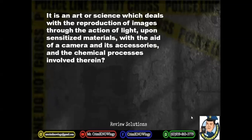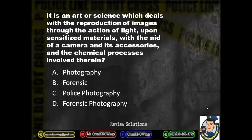Question three. It is an art or science which deals with the reproduction of images through the action of light upon sensitized materials with the aid of a camera and its accessories and the chemical processes involved therein. The choices are: A. Photography. B. Forensic. C. Police photography. D. Forensic photography.